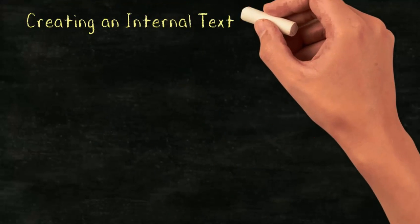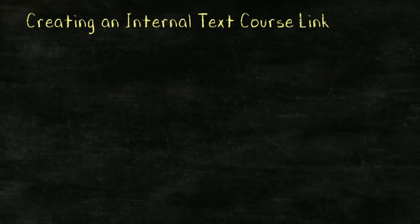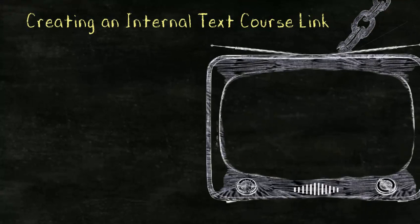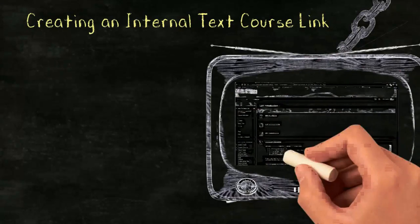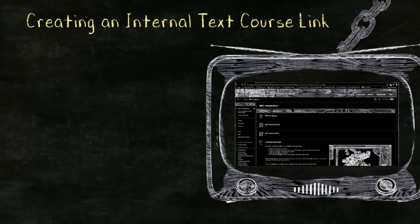Creating an internal text course link. There are times you may want to create a link to course content, such as a content page or to a discussion forum. A simple way to do this is to create a link in the content area by selecting build content, and then select course link.